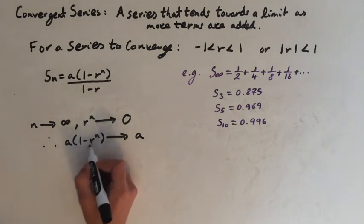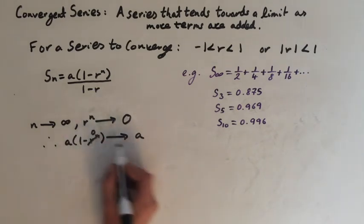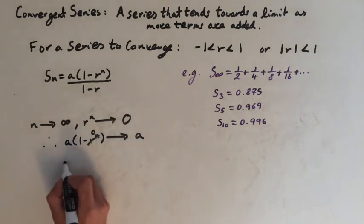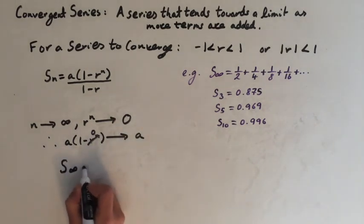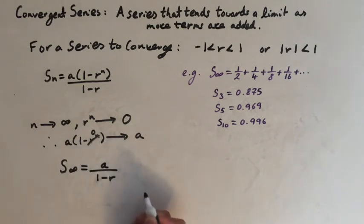Which means that a times 1 minus r to the n is going to converge to a. Because 1 minus r to the n, if r to the n is 0, this will just be 1. So 1 times a gives us a. This means that the formula should be a over 1 minus r. So let's test this using our previous series.